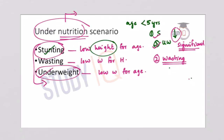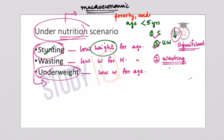Macroeconomic indicators like inflation, price rise, GDP growth, and national income tend to change over a short period of time. But social development indicators like poverty, undernourishment, and healthcare change gradually over a longer period of time.